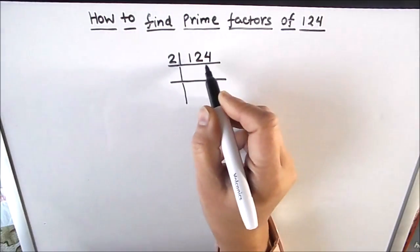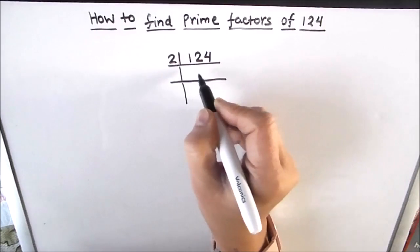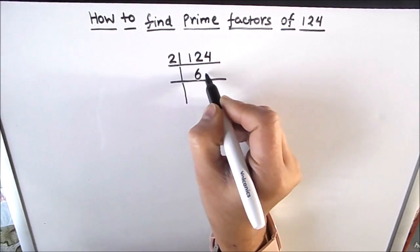As 124 is an even number let's divide it by 2. 2 times 6 is 12, 2 times 2 is 4.